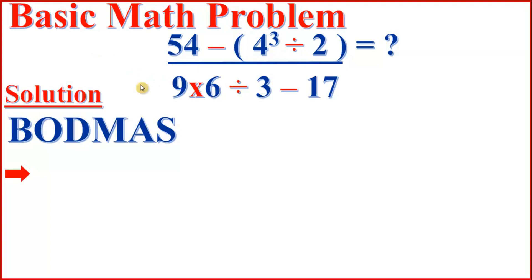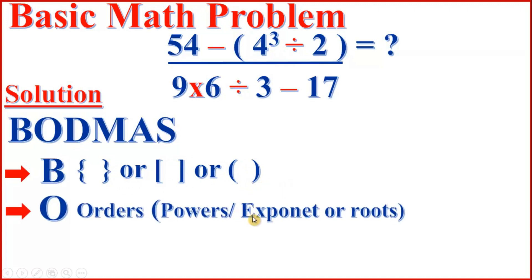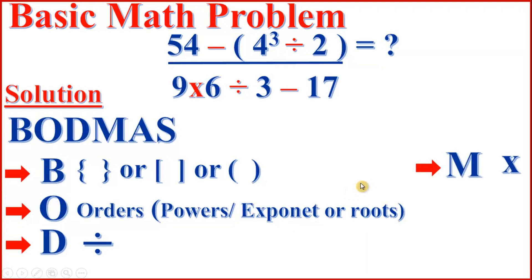Anytime you are dealing with a problem like this, it is what we call an order of operations problem. To solve this basic math problem, first we have to understand the BODMAS rule. B stands for bracket, curly bracket, or parentheses. O stands for orders, which is powers, exponents, or roots. D stands for division. M stands for multiplication. A stands for addition. S stands for subtraction.